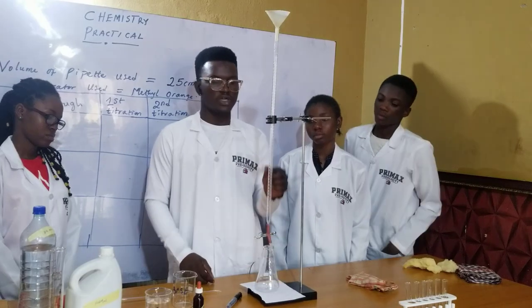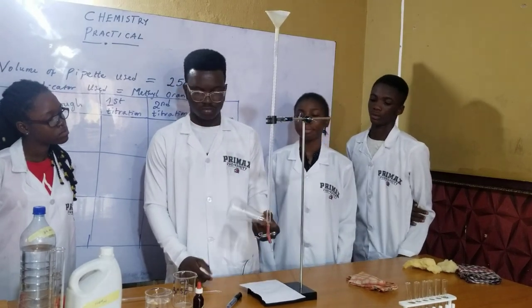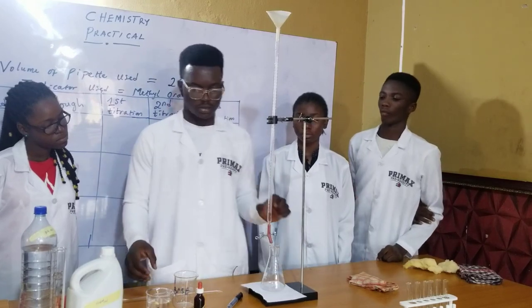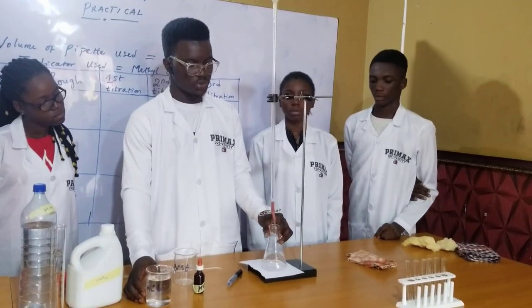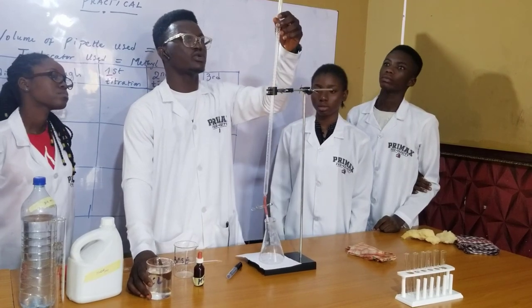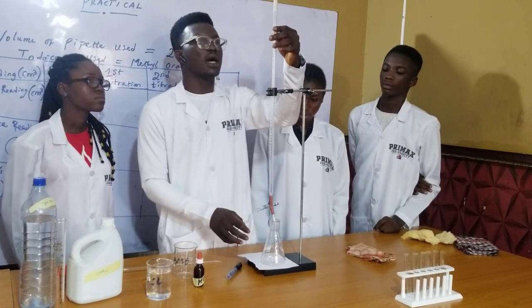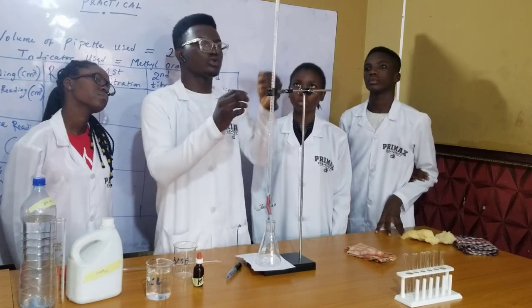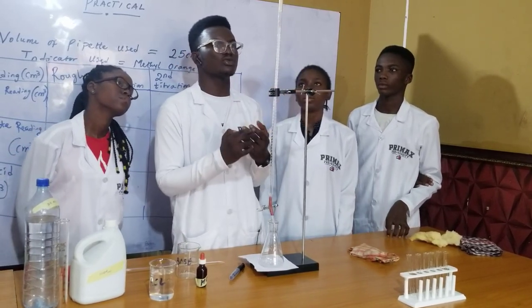I've rinsed my burette and rinsed my conical flask. Now you fill the acid — not to the brim — to the zero mark. You can see it here: to this zero mark.